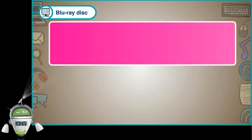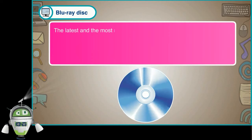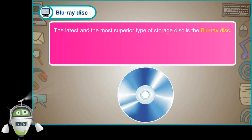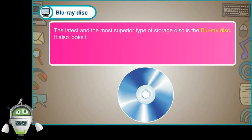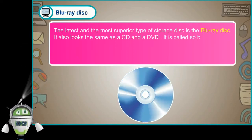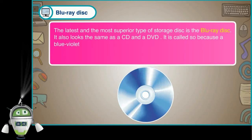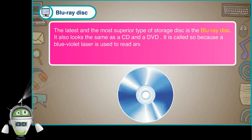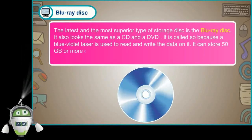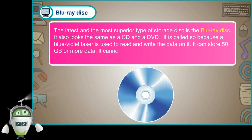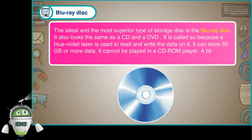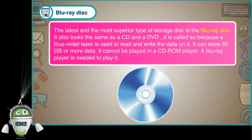Blu-ray disk is the latest and most superior type of storage disk. It also looks the same as a CD and a DVD. It is called so because a blue-violet laser is used to read and write the data on it. It can store 50 GB or more of data. It cannot be played in a CD-ROM player — a Blu-ray player is needed to play it.